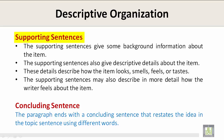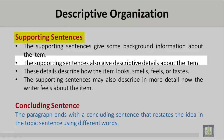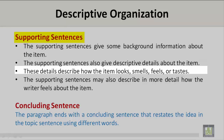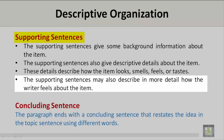Supporting Sentences: The supporting sentences give some background information about the item. They can also give descriptive details about how the item looks, smells, feels, or tastes. The supporting sentences may also describe in more detail how the writer feels about the item.